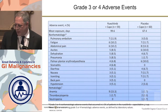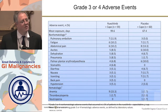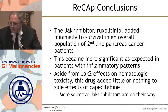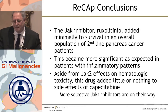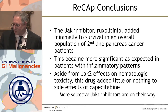The grade 3 or 4 adverse events weren't overly toxic except for the hematologic toxicities, which is an off-target effect if you're looking for just JAK1 inhibition — which is what the future JAK inhibitors are looking like. They could be more selective JAK1 inhibitors. So my conclusion is: the JAK inhibitor ruxolitinib added minimally to survival in an overall population. It became more significant in patients with an inflammatory process — again, a subset analysis, hypothesis-driving. Aside from JAK2 effects on hematologic toxicity, this drug added little or nothing to the side effects of capecitabine, and more selective JAK1 inhibitors are on the way.